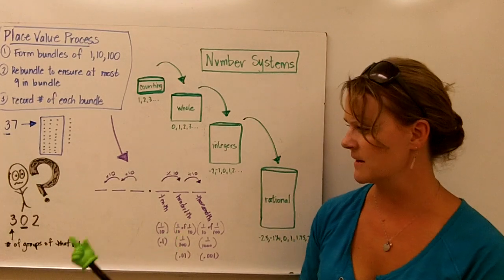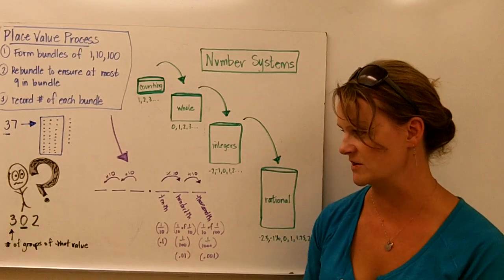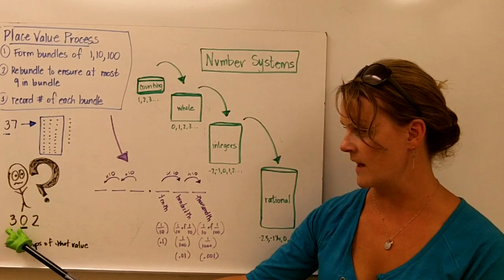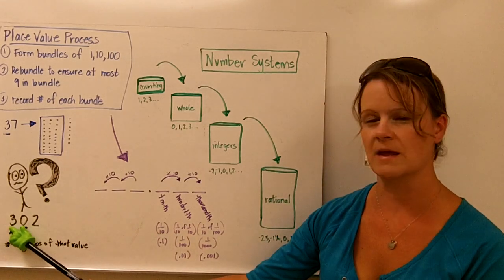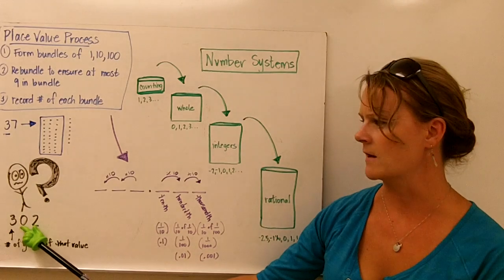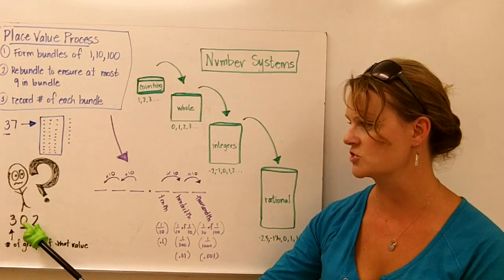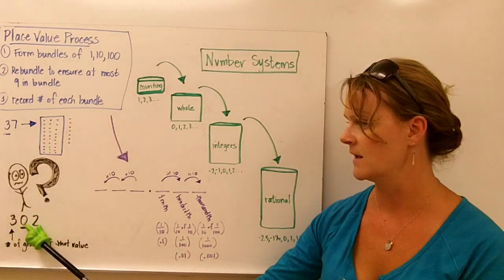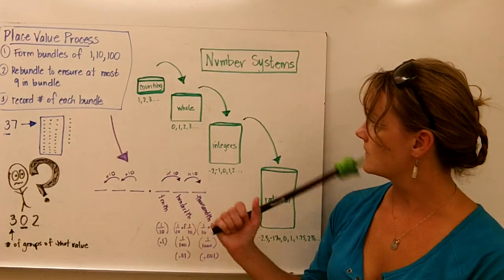A possible misconception here is with this zero. Everybody look at this, 302. We know that this tells us the number of groups of that value, so we have three groups in the hundreds value. And sometimes students get confused right here when we show zero as a placeholder. This is just simply showing that we don't have any groups of ten in this number. But it is a possible area of confusion for students.